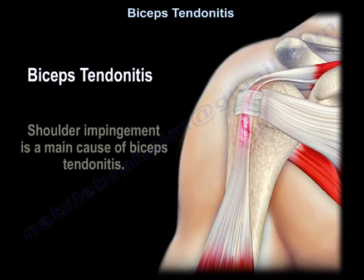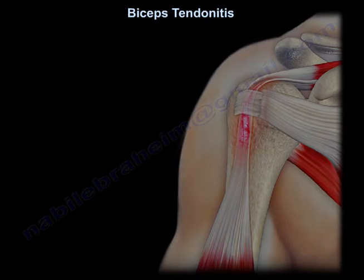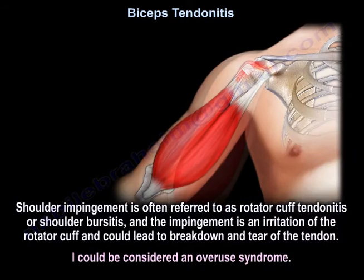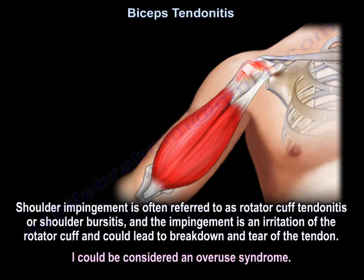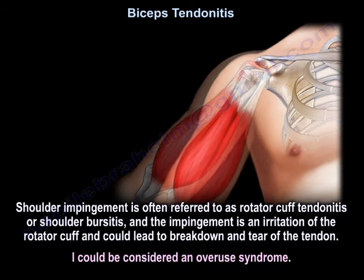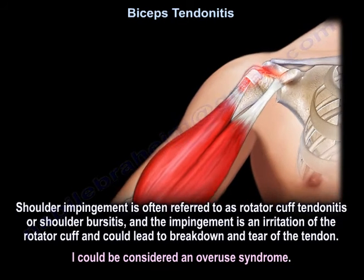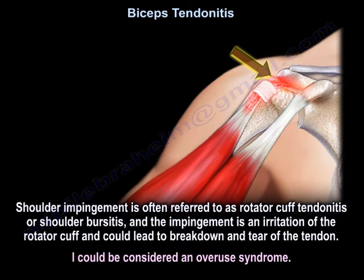Shoulder impingement is the main cause of biceps tendinitis. Shoulder impingement is often referred to as rotator cuff tendinitis or shoulder bursitis. The impingement is an irritation of the rotator cuff and could lead to breakdown and tear of the tendon. It could be considered an overuse syndrome.